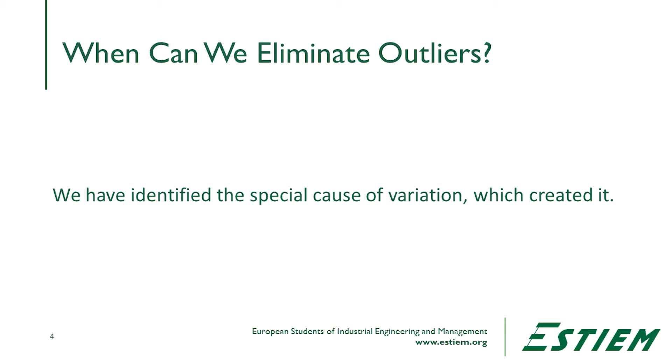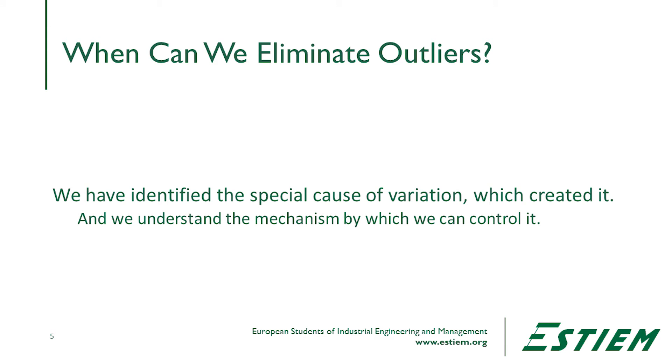Any pattern in the residuals would indicate that there's coherence there. Coherence would indicate the presence of a signal that has not been included in this analysis. So what we have to do before we eliminate any outliers is we have to really earn the right to say we want to eliminate that. That means we've identified the special cause of variation which created it and we understand the mechanism by which we can control that special cause of variation. Unless we can do that, we have no right to drop any data out of our original analysis.